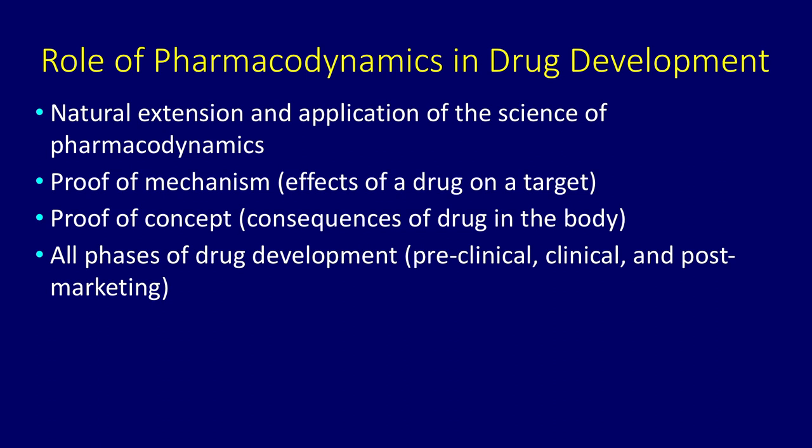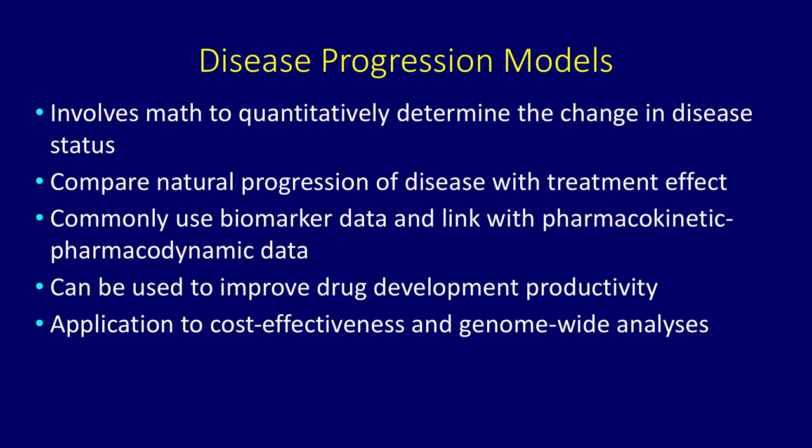Disease progression models have been dramatically improving over the last one to two decades. These models involve mathematics to quantitatively determine the change in disease status over time. We can compare the natural progression of the disease with the treatment effect, and we commonly use biomarkers linked with pharmacokinetic and pharmacodynamic data. Pharmacodynamics can be used to improve drug development productivity, and disease progression models can also be applied in cost-effectiveness and genome-wide analyses.